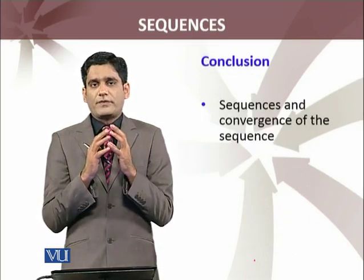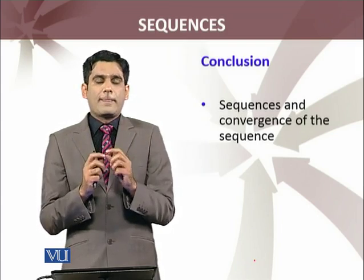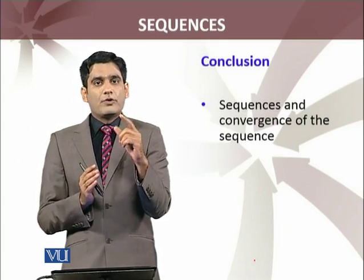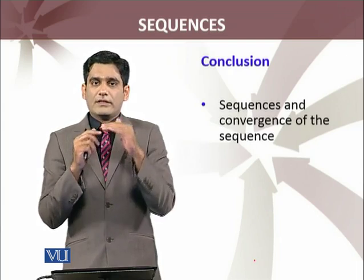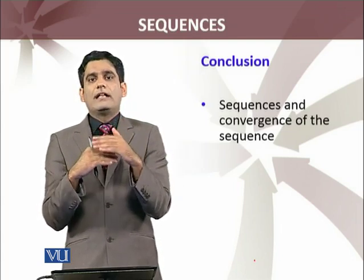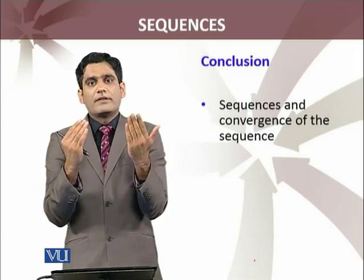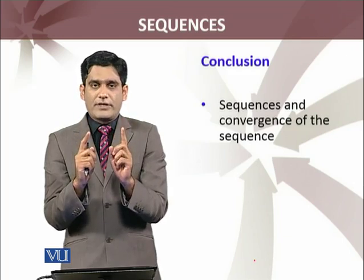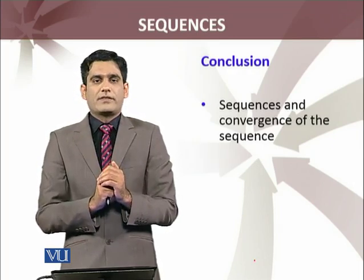So, to conclude this module: we have defined sequences and the nth term of a sequence. The very important concept is that of a convergent sequence — when does an infinite set of sequence terms converge towards a real number? Using the epsilon definition: for every epsilon greater than 0, we must have a number N such that all terms of the sequence beyond N lie within the interval (L minus epsilon, L plus epsilon) for all epsilon greater than 0. This means we can narrow down that interval as much as we like. If this holds for all epsilon greater than 0, we say the sequence s_N converges to the real number L. We will discuss this in more detail in the next modules.